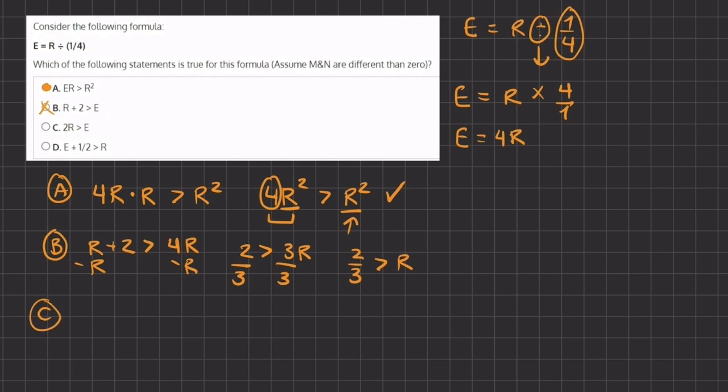Now let's move on to C. C states that 2R is greater than E, which is 4R. This statement is already incorrect because 2 times R has to be smaller than 4 times R if the values of R are the same, so C is incorrect.